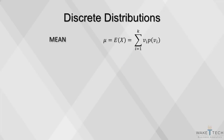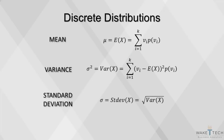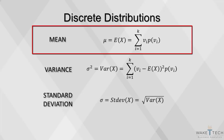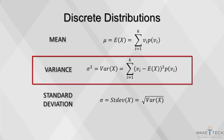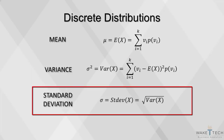While we won't be computing these measures by hand, you do need to be aware of the formulas. The mean, also called the expected value, is a weighted sum of all possible values, weighted by their probabilities, denoted by the Greek letter mu. The variance is a weighted sum of the squared deviations of the possible values from the mean, where the weights are the probabilities. The standard deviation is simply the square root of the variance, denoted by the Greek letter sigma.